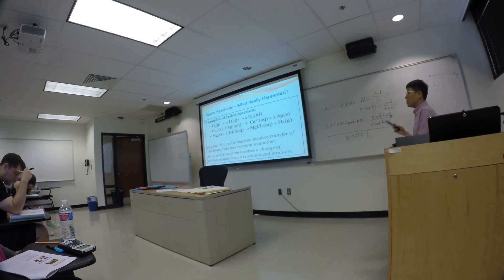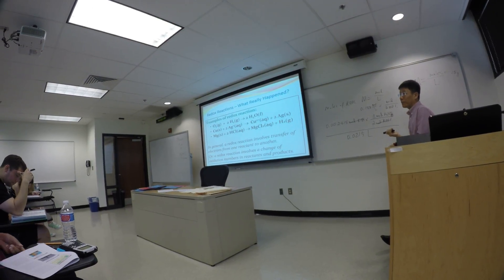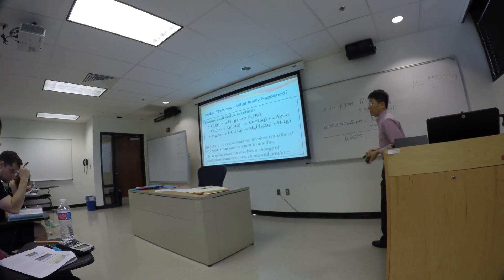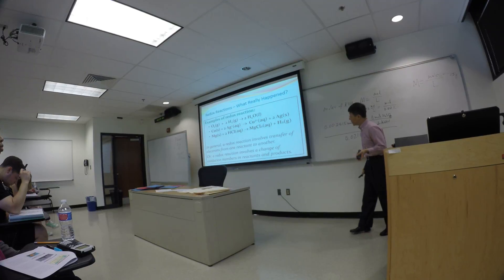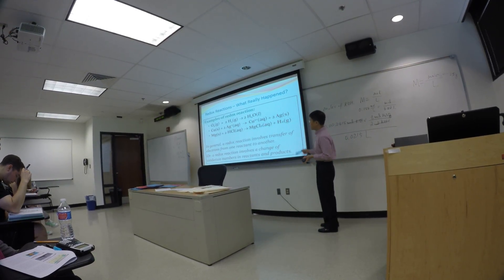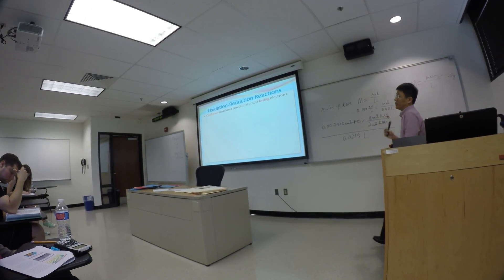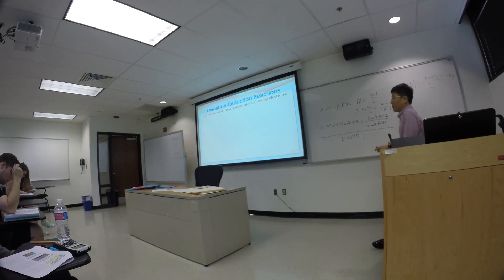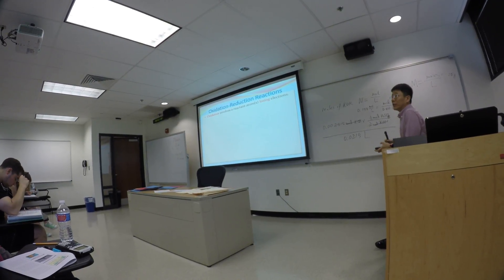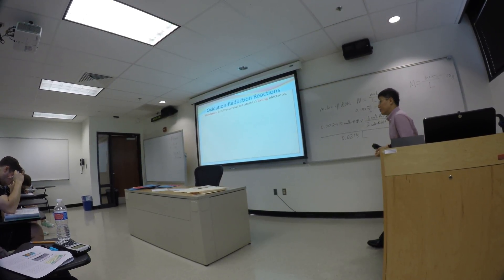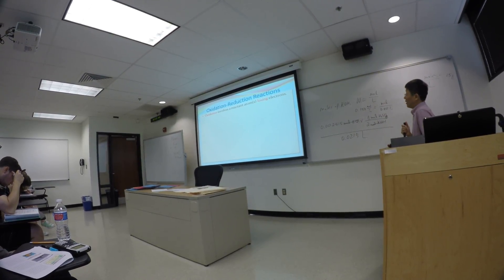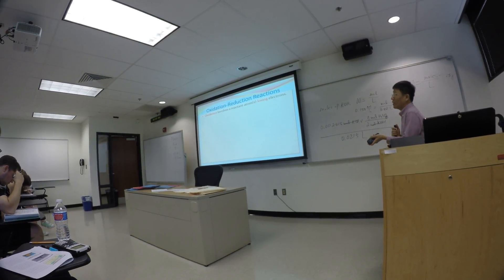A redox reaction involves a change of oxidation number. How do we determine oxidation number? That's one of the key objectives of this particular learning activity. So how do we recognize a redox reaction? Well, there are certain terms involved. Those are what we call the D-word definitions. Oxidation involves the reactant atoms losing electrons — that's one thing we need you to memorize.